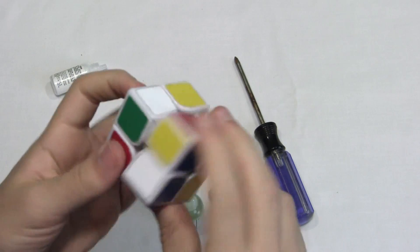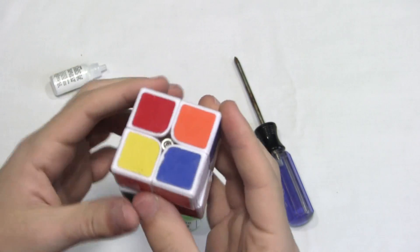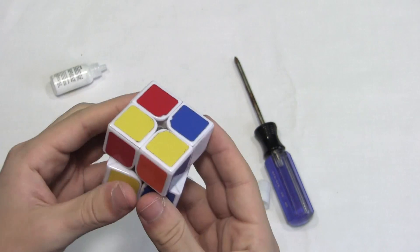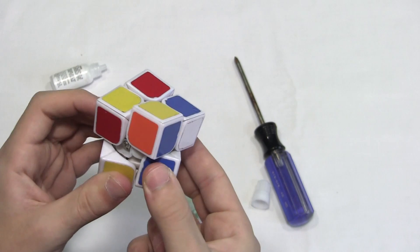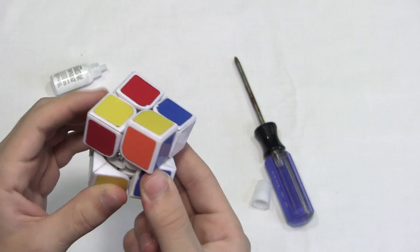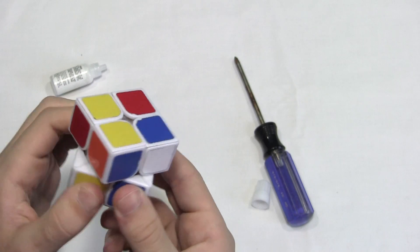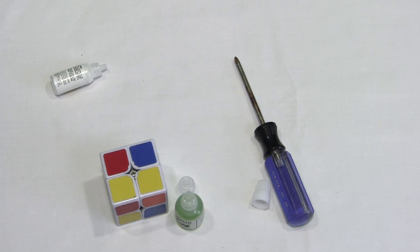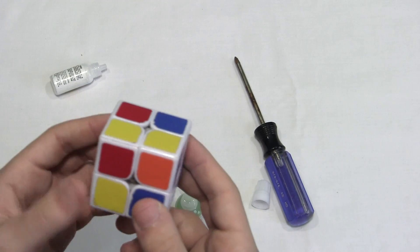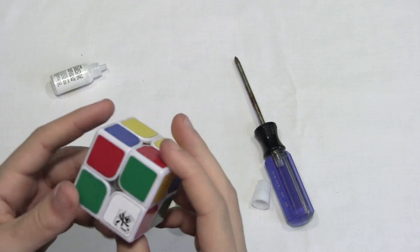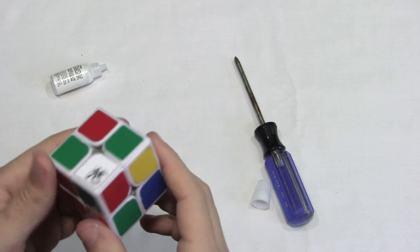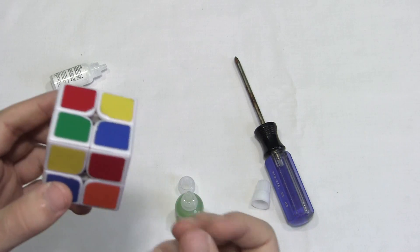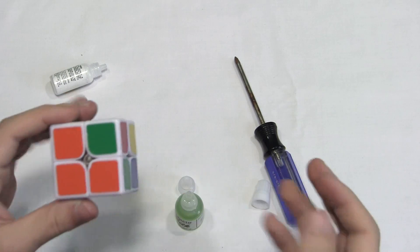So now what you want to do is you want to tighten it or loosen it to your liking. Now, one way to check if it's good or not is to corner cut it. If it corner cuts easily, as this thing is obviously not doing because it's a knockoff, but if it corner cuts really easily, then you're perfectly fine. And if it turns perfectly fine to your liking, then go ahead and keep it that way.